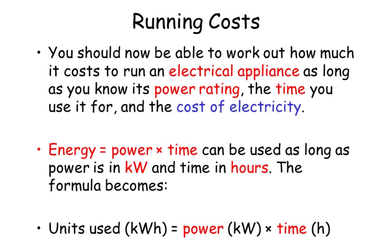You should now be able to work out how much it costs to run an electrical appliance, as long as you know the power rating, the time you use it for, and the cost of electricity. Remember: energy equals power times time, with power in kilowatts and time in hours. If the power is in watts, divide by 1,000 to get kilowatts. If time is in minutes, divide by 60 to convert to hours.